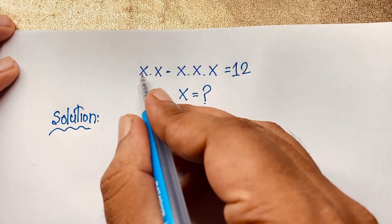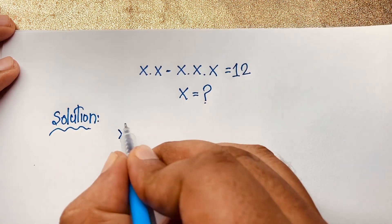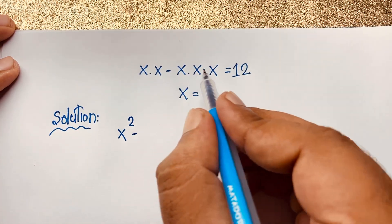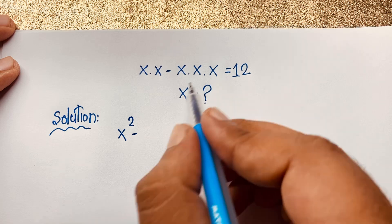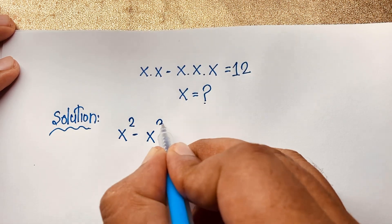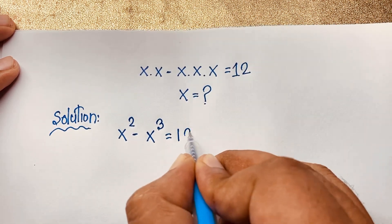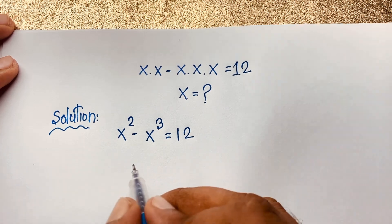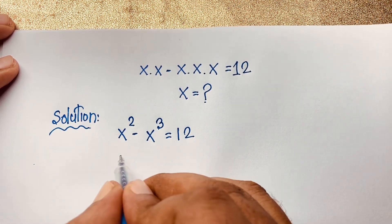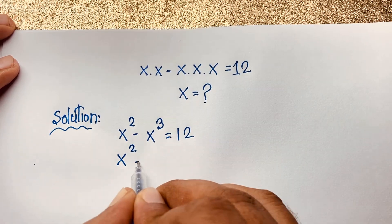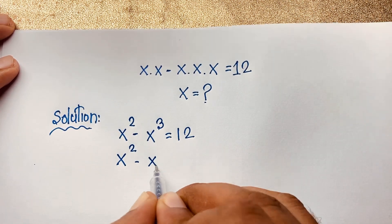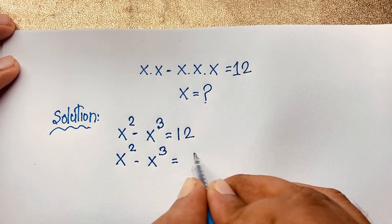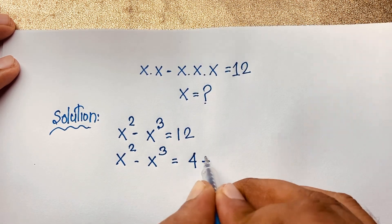We have x times x, which will be x to the power 2, minus x times x times x, which will be x to the power 3, is equal to 12. So the expression is x squared minus x cubed equals 4 plus 8.